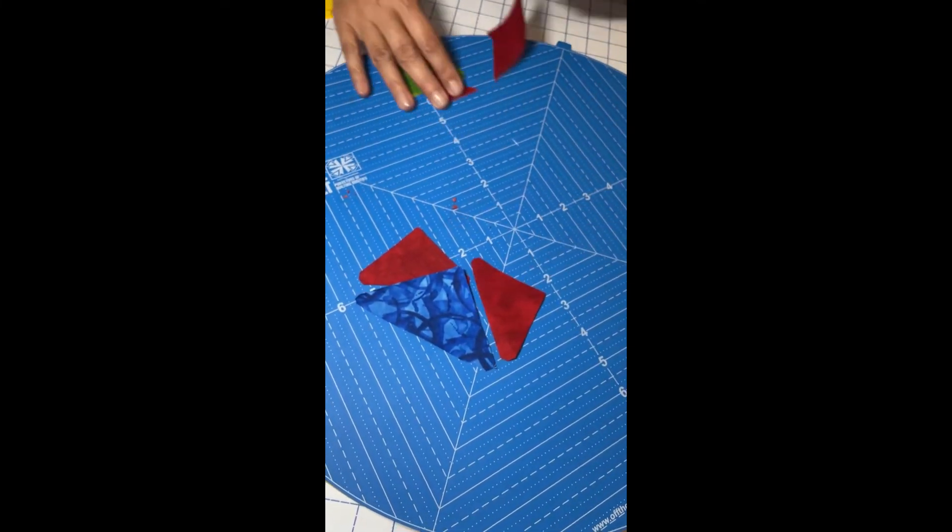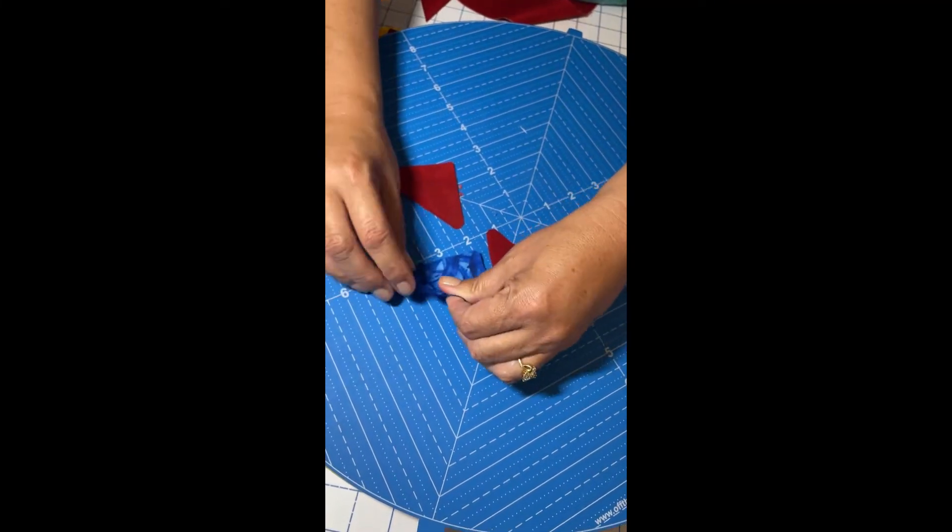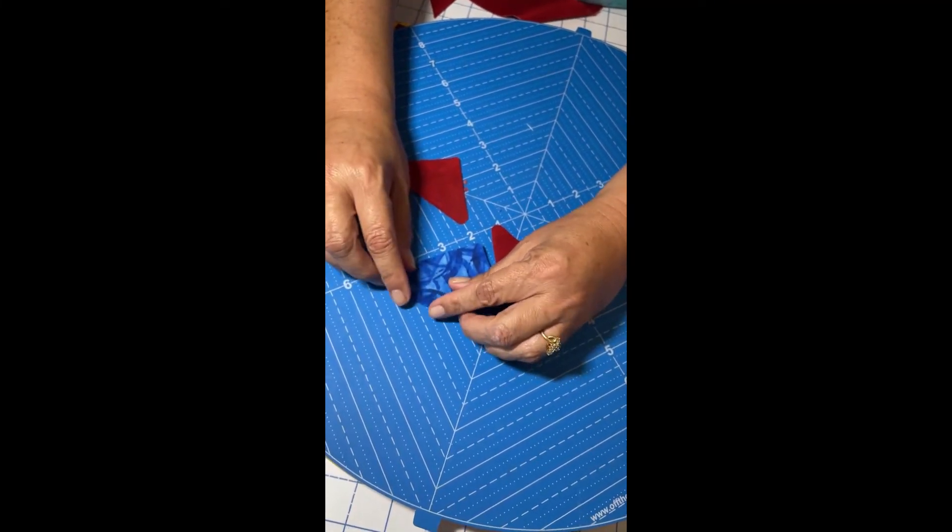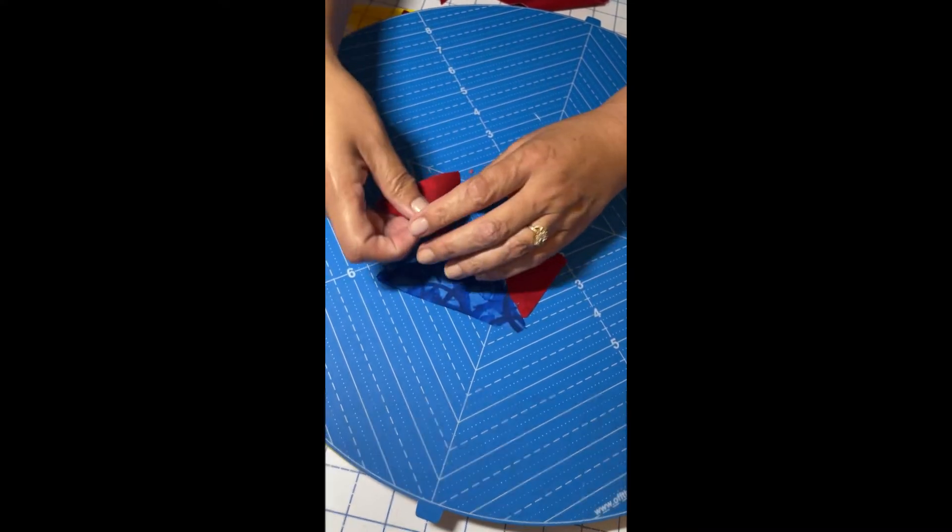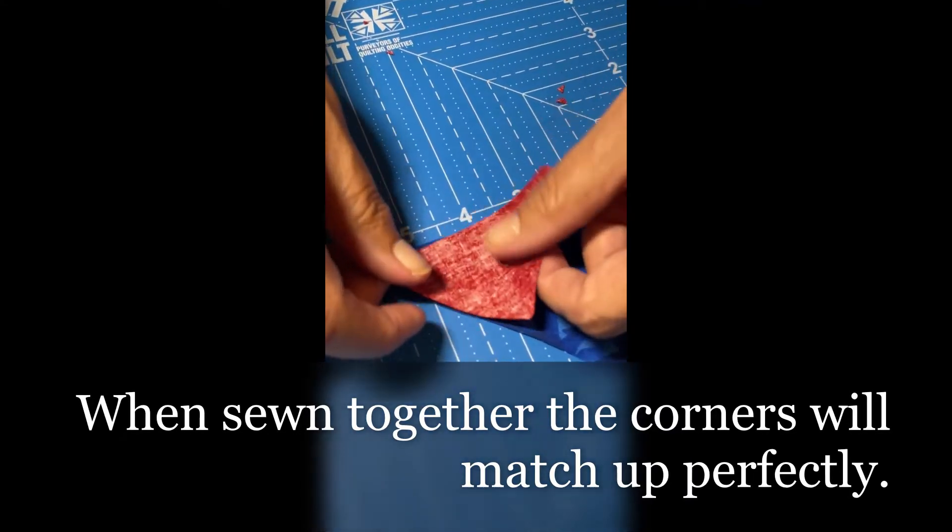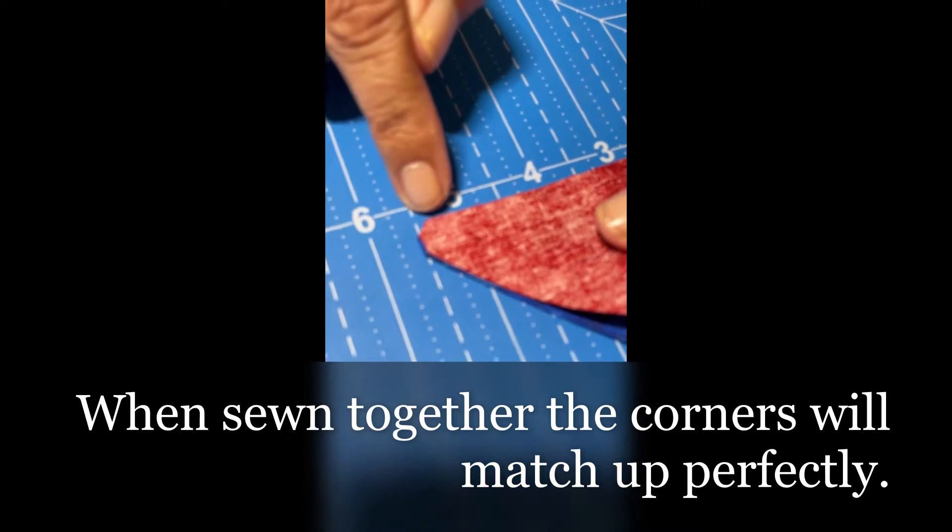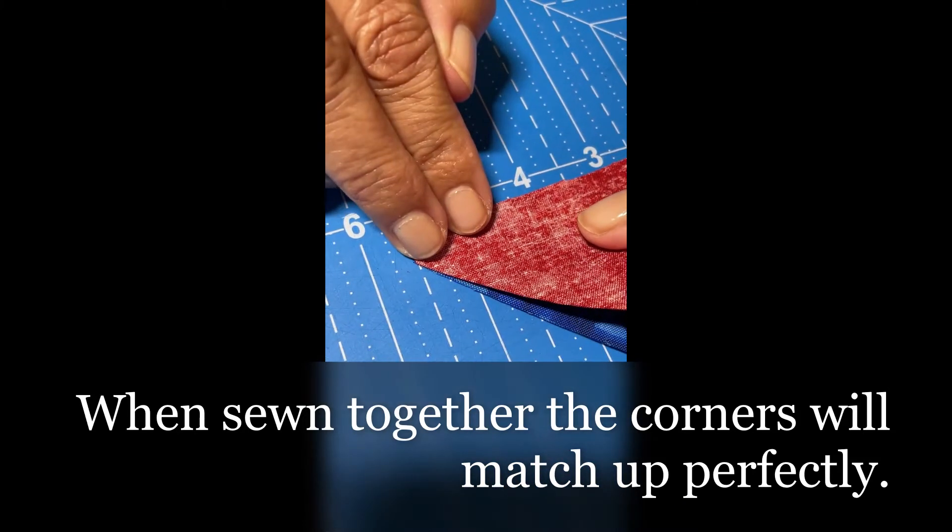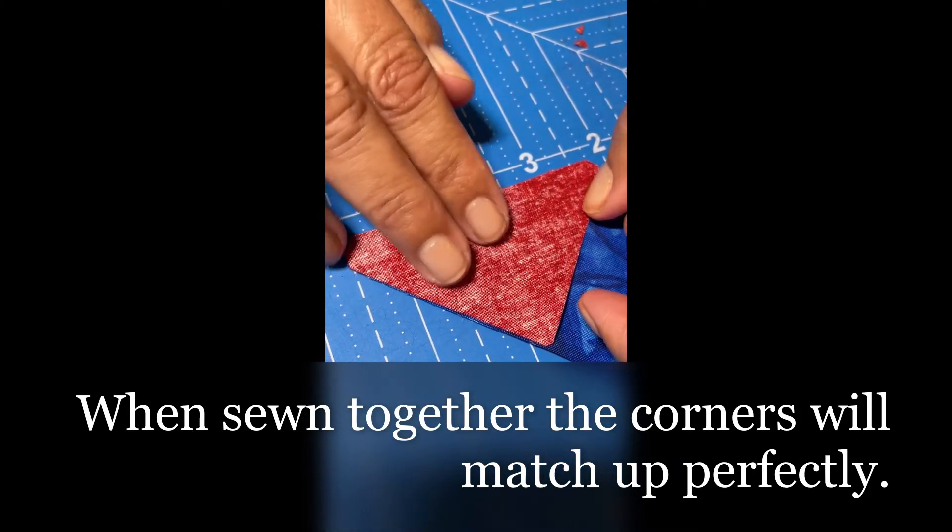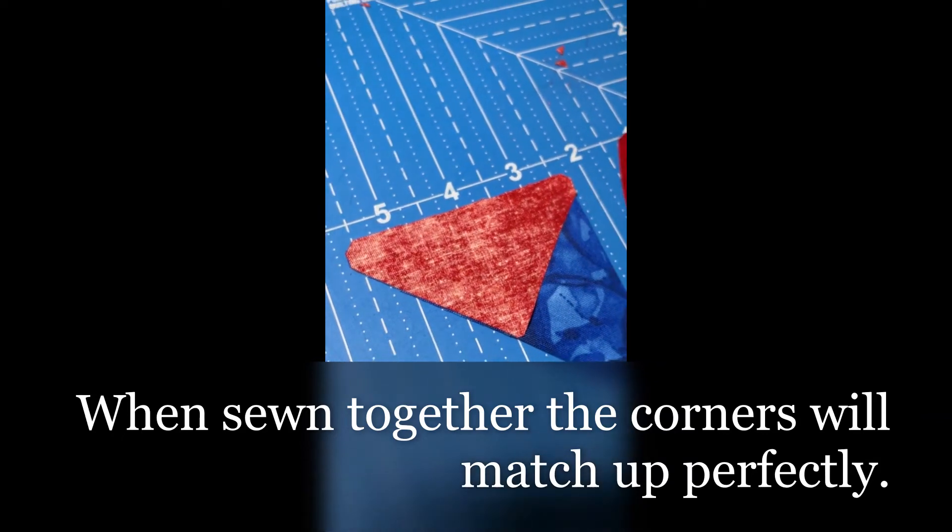Now when I want to sew these together, the cool thing about these engineered edges is when I flip this over, instead of having points that hang out all over, you can see my ends match up perfectly. Let me go sew these together and show you how well that works.